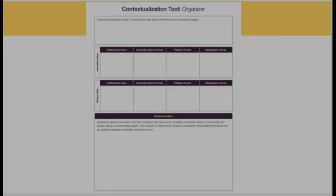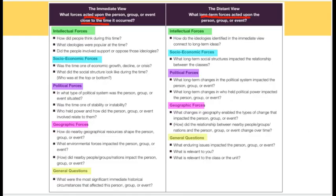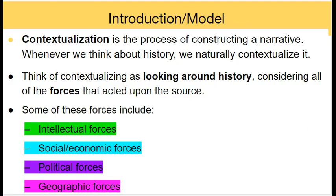They have this whole thing here — immediate view, distant view, a bunch of charts. I will get overwhelmed, so I need to unpack this. Contextualization is the process of constructing a narrative — you're saying what came before, the forces that made something happen. As I showed you earlier, I color-coded: intellectual meaning thoughts and philosophies, socioeconomic meaning people and money, politics meaning who was in charge, and geography.